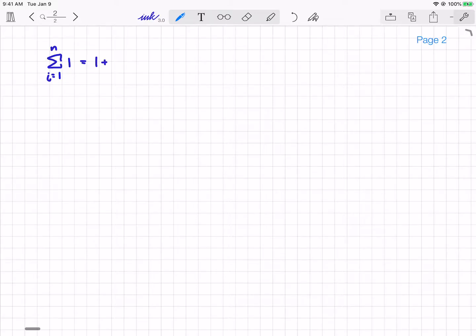So I'm going to do 1 plus 1 plus 1 plus a whole bunch of other 1s, and I'm going to end up doing that n times. So that end result, the sum of 1 from i equals 1 to n, is simply 1 plus itself n times, which equals n.